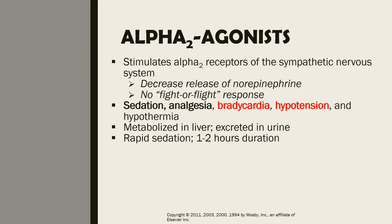Alpha-2 agonists, from the name itself, stimulate the alpha-2 receptors of the sympathetic nervous system. This decreases the release of norepinephrine and therefore decreases the fight-or-flight response, so this drug will calm down the animal. It causes sedation, analgesia, bradycardia, hypotension, and hypothermia.